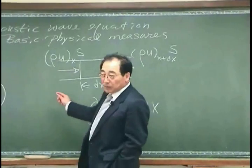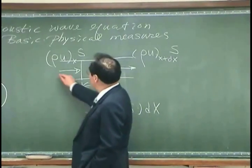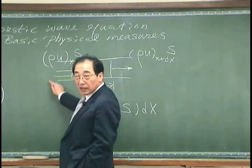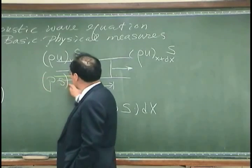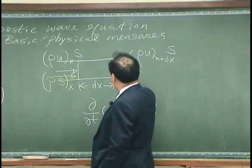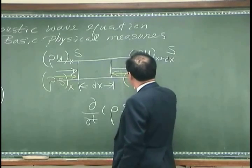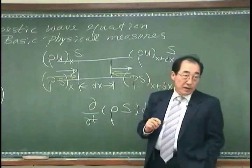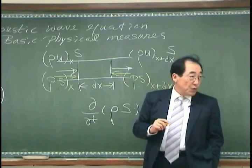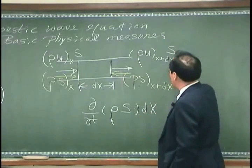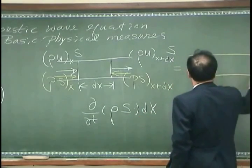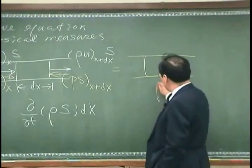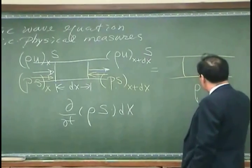We have to consider what? The force acting on this surface, that is p multiplied by s at x, and the force acting on this surface is p s at x plus dx. The net force difference would accelerate the mass inside of this volume, that is rho s.